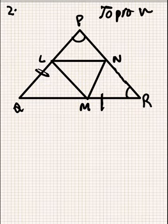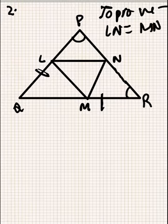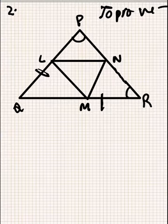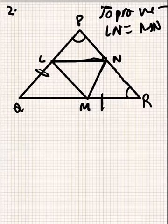We can write: to prove is LN is equal to MN. The simplest method to solve this - see, this is LN, this line is LN, and this is MN. These are parts of two triangles.